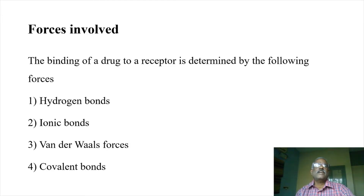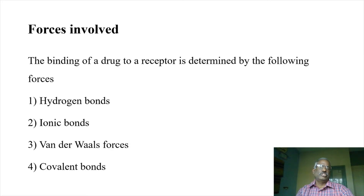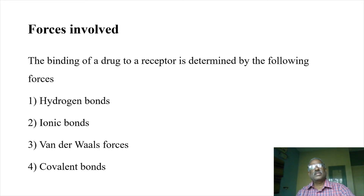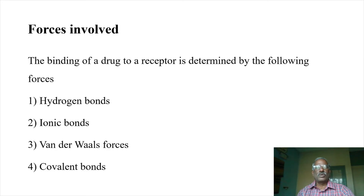You can say association theory and dissociation theory. When the drug binds to the receptor, that is association; when it separates, that is dissociation. Weaker bonds — hydrogen bond, ionic bond, van der Waals forces — are reversible. If a covalent bond exists, they are irreversible.